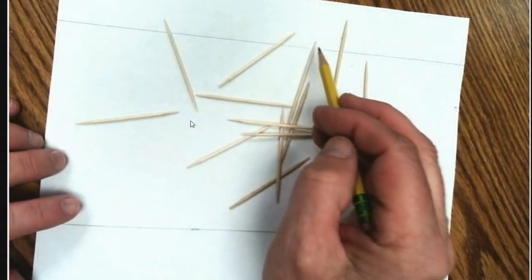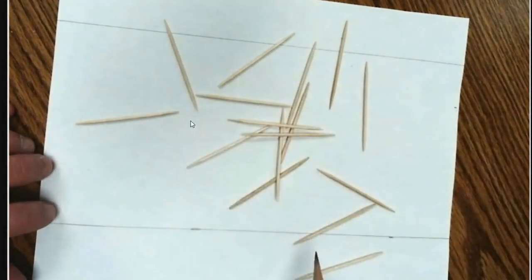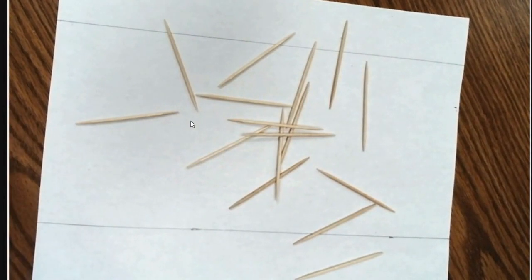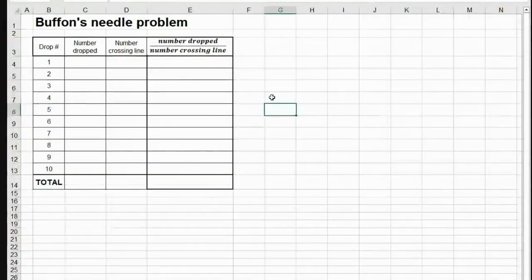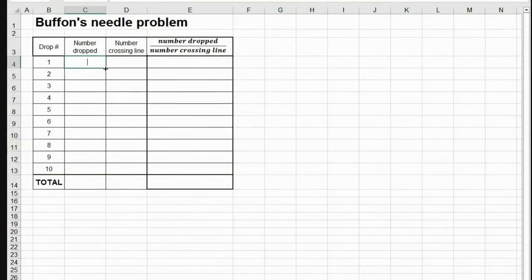Now I'm going to count how many are on the line. One, two, three, four, five. So I've got five. So I'm going to take, I've already kind of made this little sheet to keep track of it on. So the first time I dropped 16 and there are five. So I got it where it automatically calculates for me, that's 3.2. 16 and 5. So I'm going to drop again.